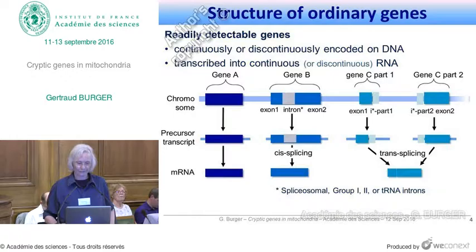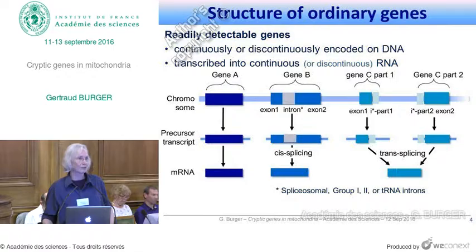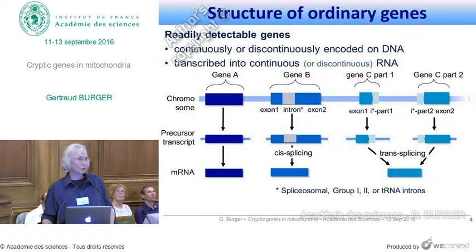Here is the structure of ordinary genes. On the left, you see the simplest gene structure, which is transcribed into RNA, then processed at the end, and it is immediately a messenger RNA that can be translated. In the middle, you see gene B, which is interrupted by an intron — it can be a spliceosomal intron, group 1, group 2, or tRNA intron, also called archaeal intron. The intron is transcribed together with the exons on both sides, and then spliced to generate a continuous messenger RNA that can be translated.